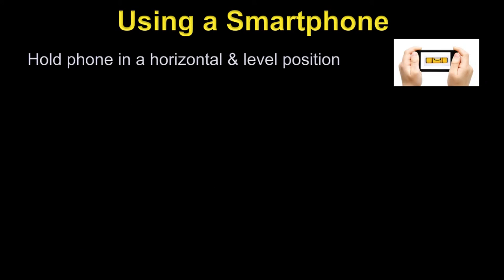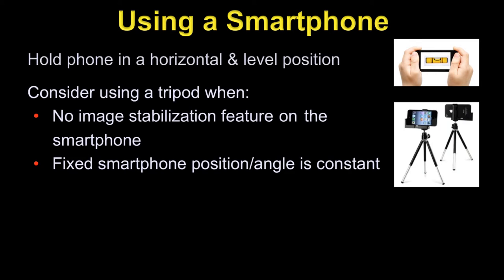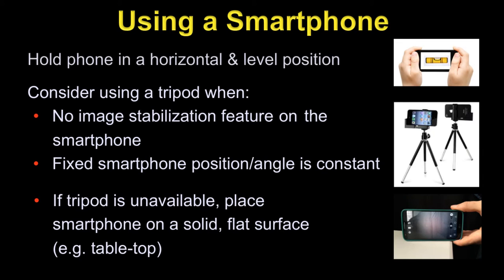There are some tips for using a smartphone. First of all, it is absolutely essential that it be held in the horizontal and level position. Consider using a tripod when no image stabilization feature is present on the smartphone, and when the distance to subject is constant throughout the presentation. If a tripod is unavailable and stabilization is necessary, place a smartphone on a solid, flat surface like a tabletop.